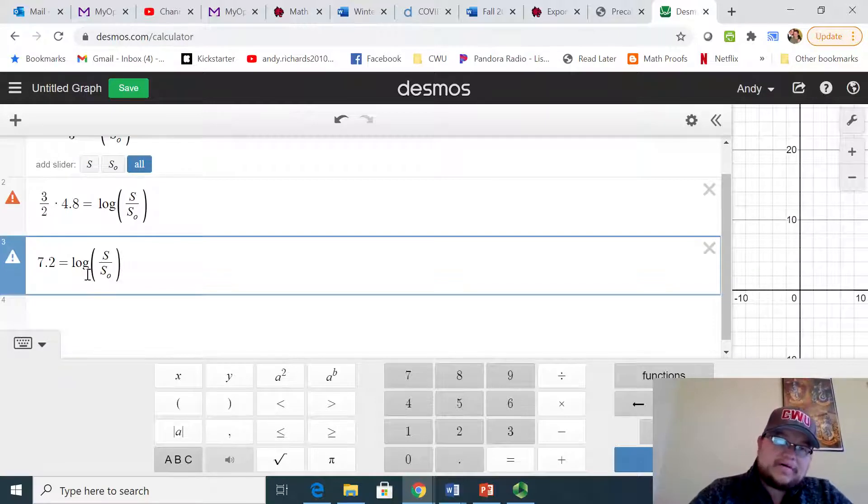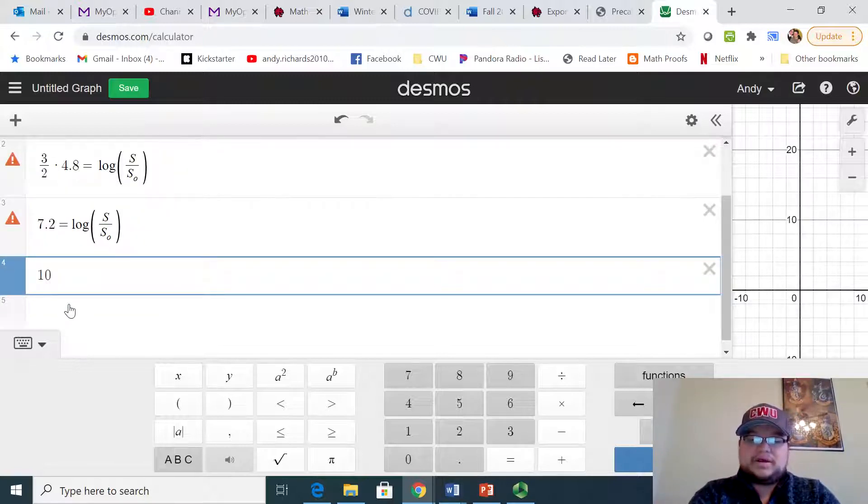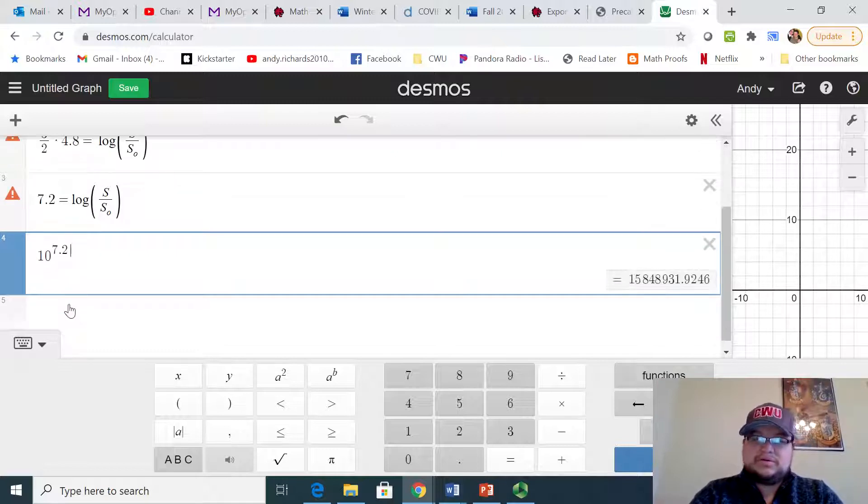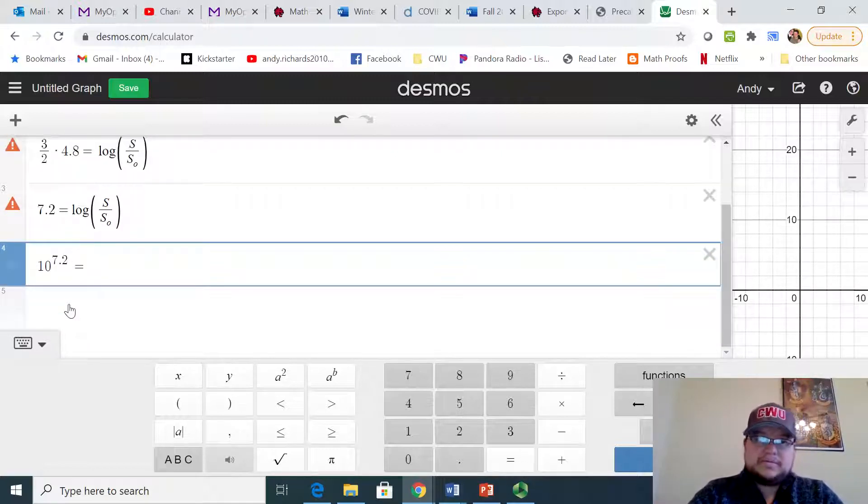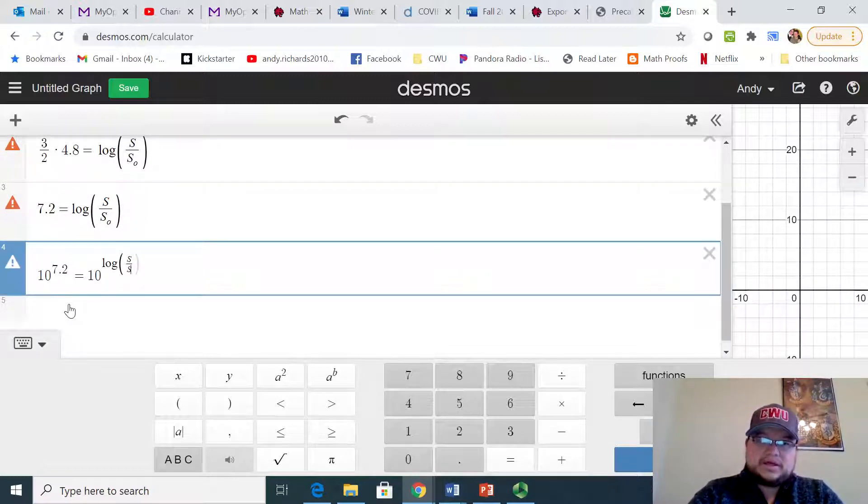So now that we have this, we need to remember that this logarithm is really log base 10. So in order to isolate this to S over S sub zero, we could convert it over by raising both sides to the 10. So we'd have 10 to the 7.2, and that's going to equal 10 to the log of this S over S sub zero.